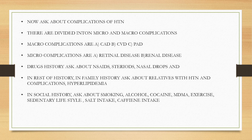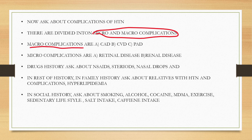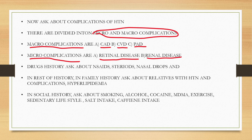Next, we ask about the complications of hypertension. They are divided into macro and micro complications. Macro complications include coronary artery disease, cardiovascular accidents like stroke, and peripheral artery disease. Micro complications include retinal disease and renal disease. These are the microvascular complications of uncontrolled hypertension.